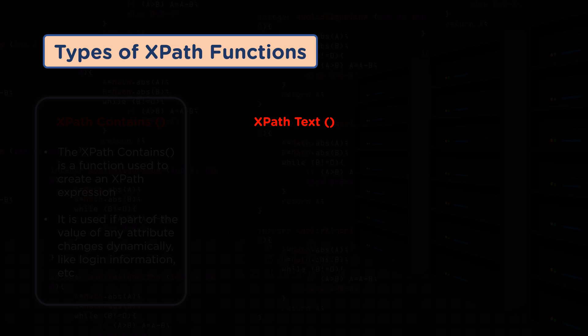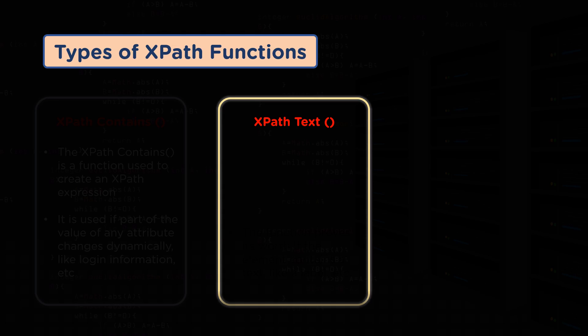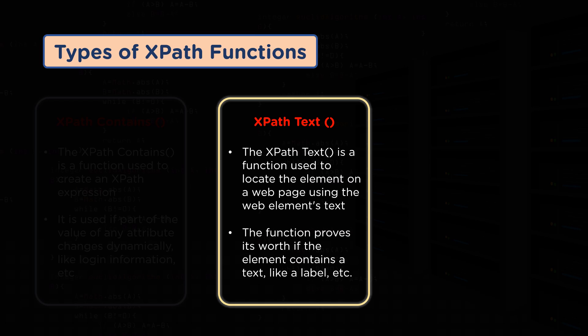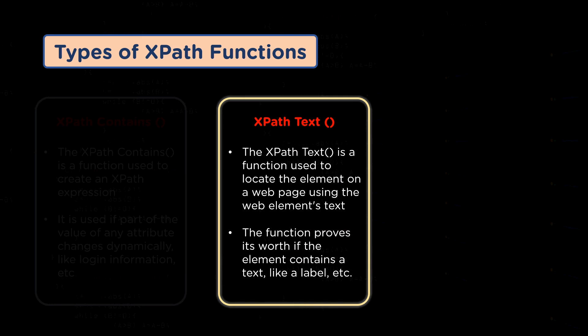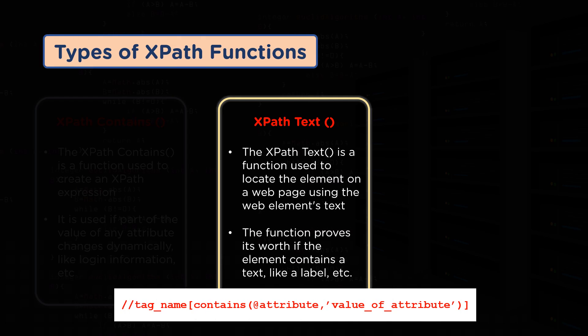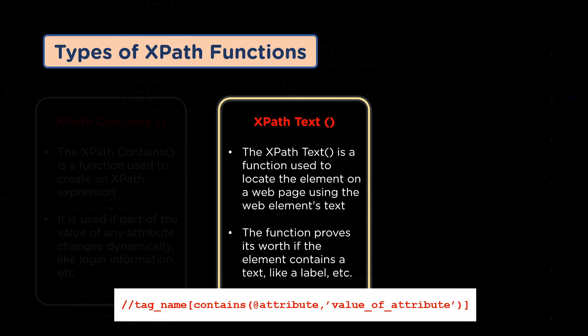The second type of XPath function is the XPath text function, which is used to locate elements on the web page using the web element's text. It helps find the exact text element and locates elements within a set of text nodes. The function is especially useful if the element contains a text label. Here we can see the syntax of XPath text on the screen. The text method returns the text of a web element when identified by the tag name and compared with the right-side value.